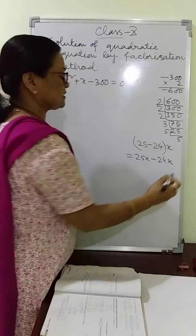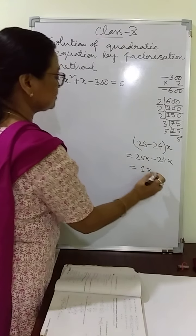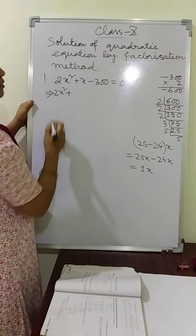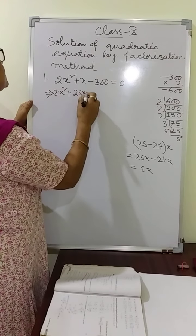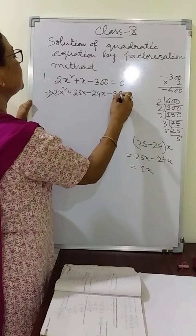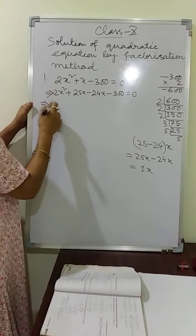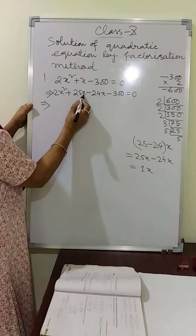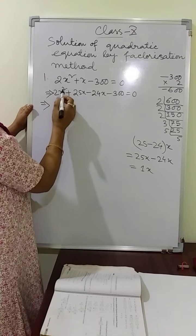Ultimately what you get? 1, which is the middle term coefficient. So that 1x you write in this form: 2x squared plus 25x minus 24x minus 300 equal to 0. Now from this, you take the common factor from the first square — only x is the common factor, because there is x and x squared.